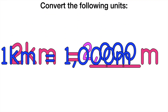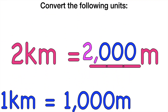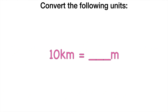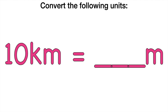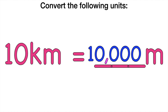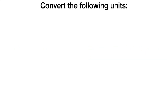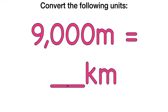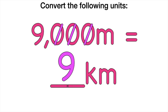Again, always remember, in every 1 kilometer we have 1,000 meters. How about this? 10 kilometers is equal to how many meters? 9,000 meters is equal to how many kilometers? Fantastic — we have 10,000 meters. All you need to do is to remove three zeros.